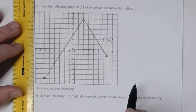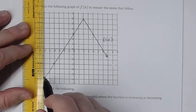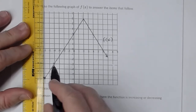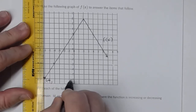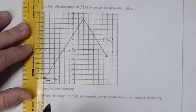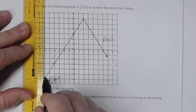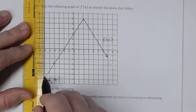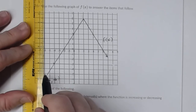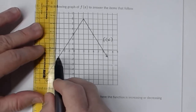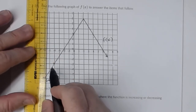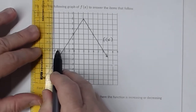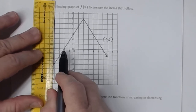When talking about domain, always go along the x-axis from left to right, because we are interested in the interval and we always go from smallest to largest. As I go from left to right I start touching the graph at this closed circle, and that's at negative six. This point is negative six comma negative six — the x value is negative six and the y value is negative six.